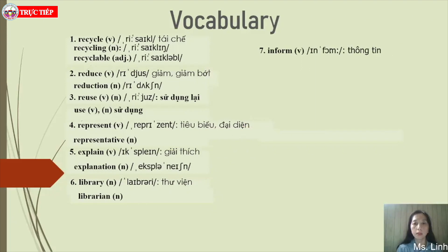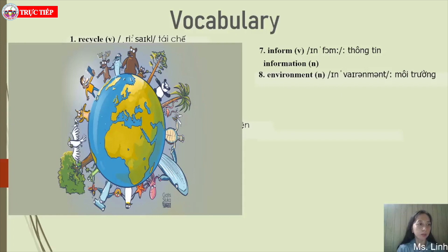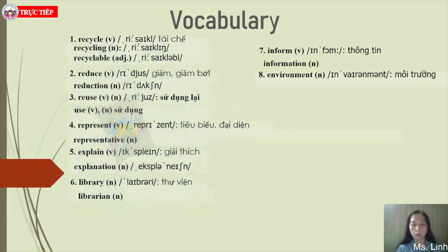Number seven: inform — verb. Tell somebody about something. Related noun: information. Number eight: environment — noun. The natural world in which people, animals and plants live in — môi trường (environment). We also have the adjective: environmental, and the adverb: environmentally.